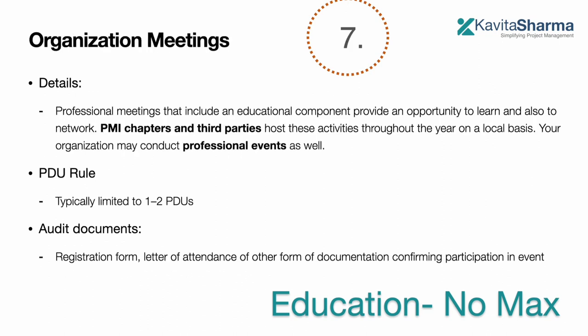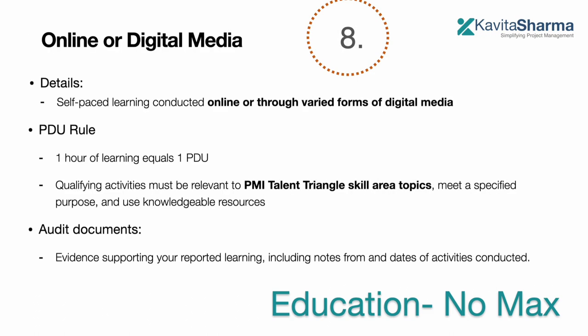The next free way of earning PDUs is organization meetings. You can be part of PMI chapters, third-party events, or networking forums. The PDU rule is typically limited to one or two PDUs per event since you can't be spending extensive time there. Supporting documents include a registration form or letter of attendance.